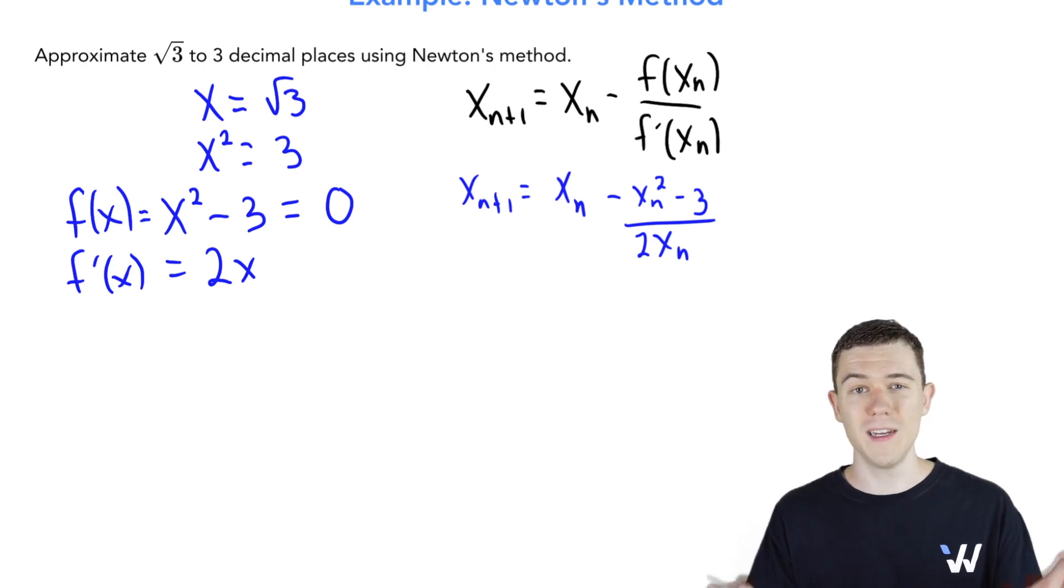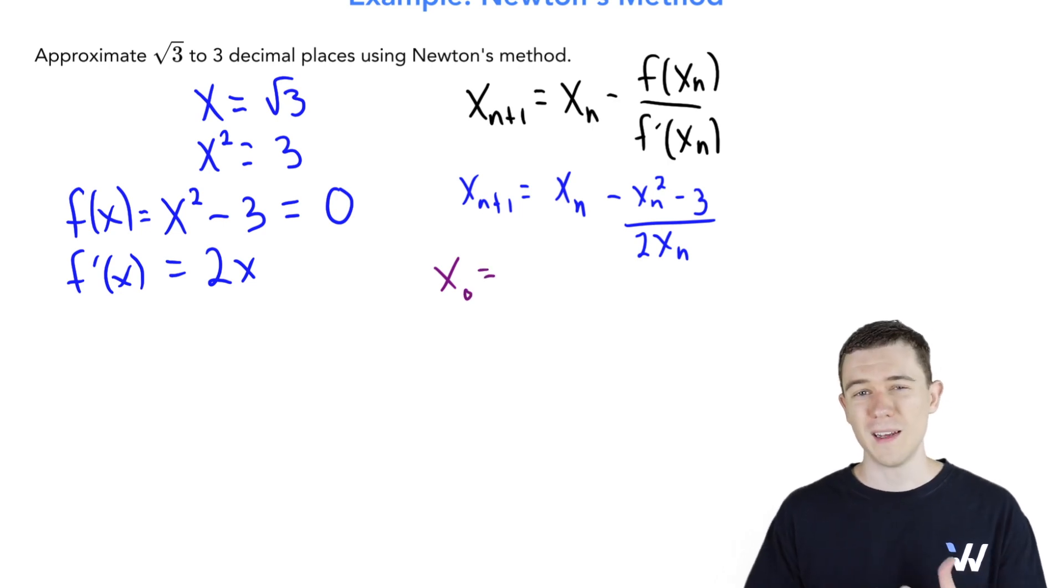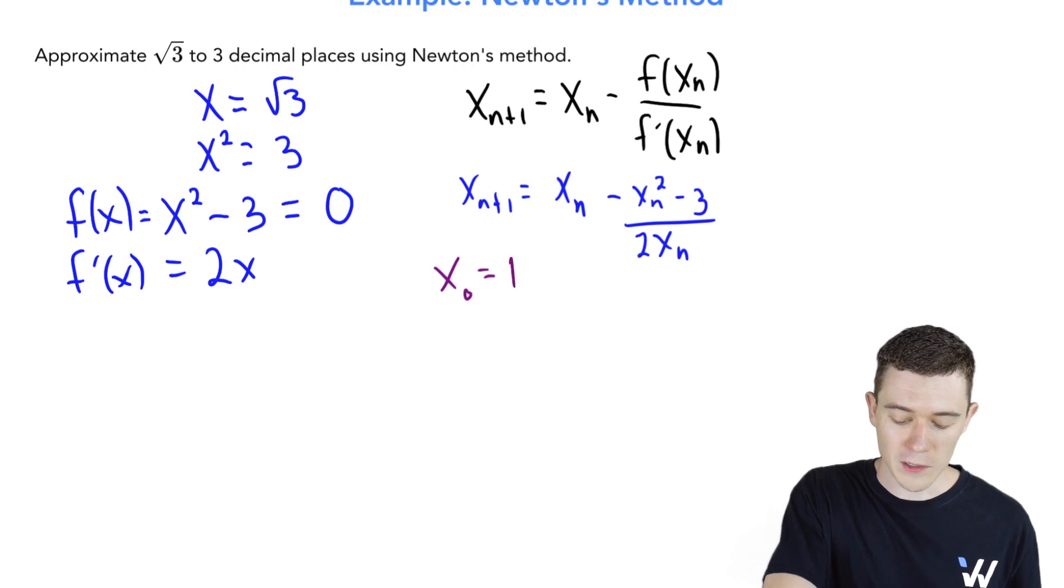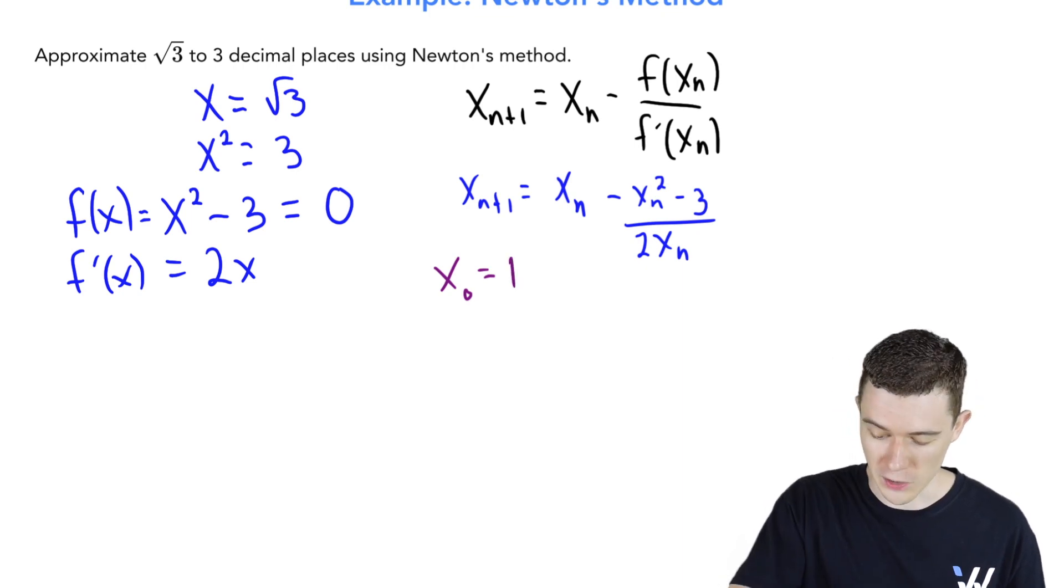We just need a starting place. We need an x sub zero. If you know anything about square root of three, it's certainly less than the square root of four, which is two. It's certainly bigger than the square root of one, which is one. I think for simplicity's sake, let's just choose our starting point to be one and see how good of an approximation we can get.